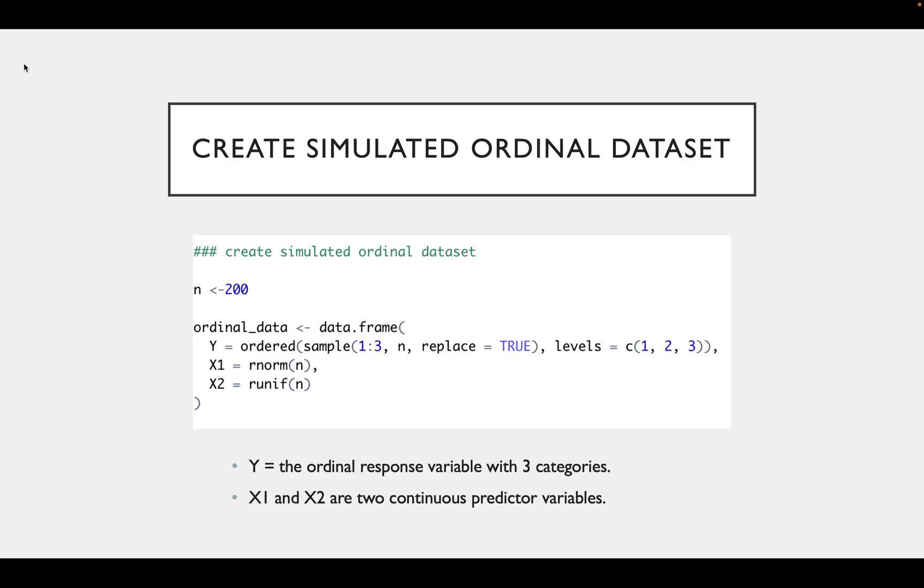For this tutorial, we're going to create a simulated ordinal dataset using this piece of code, where Y is our ordinal response, our dependent variable, and this has three categories as you can see by the levels function. Then we have X1 and X2, which are our two continuous predictor variables.